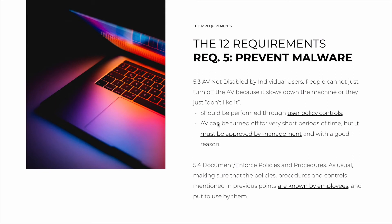There can be exceptions for short periods of time, but these must have a very strong reason and must be approved by management. For example, a user may go into a locked room disconnected from any network and run a CPU-intensive program to process large batches of data for one hour, then turn the antivirus back on and run a scan immediately after. That's acceptable, but it should have a strong reason.